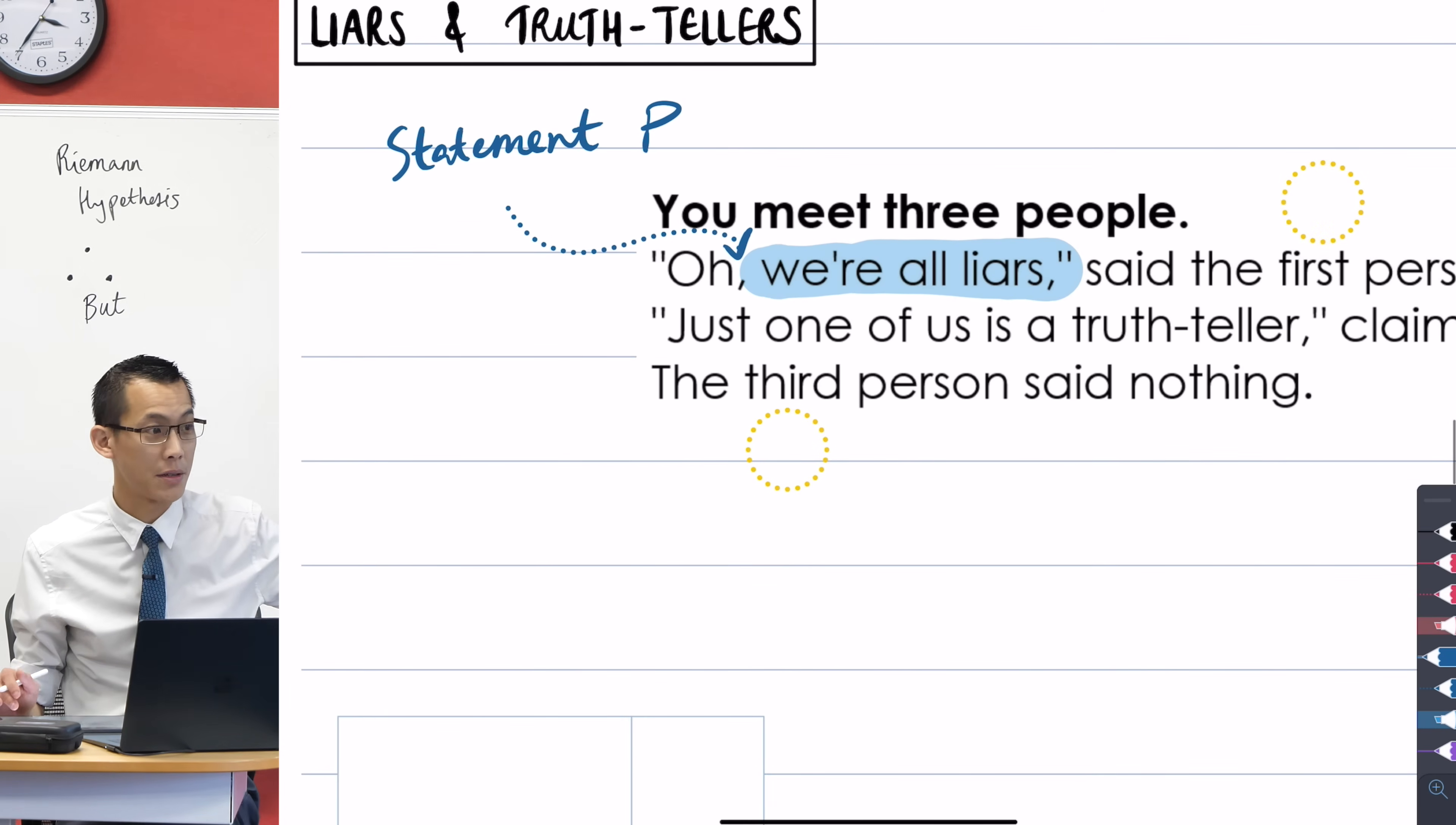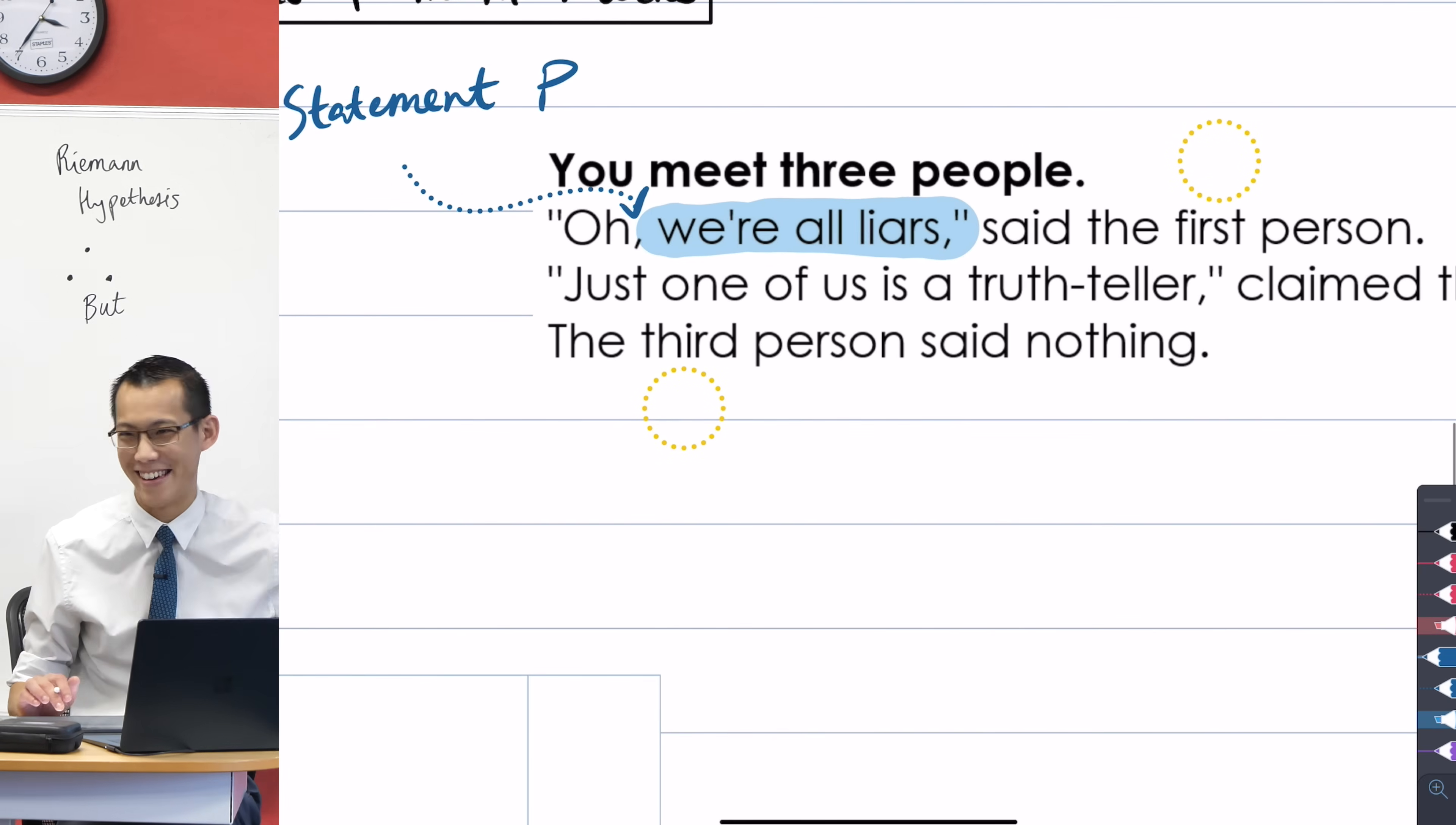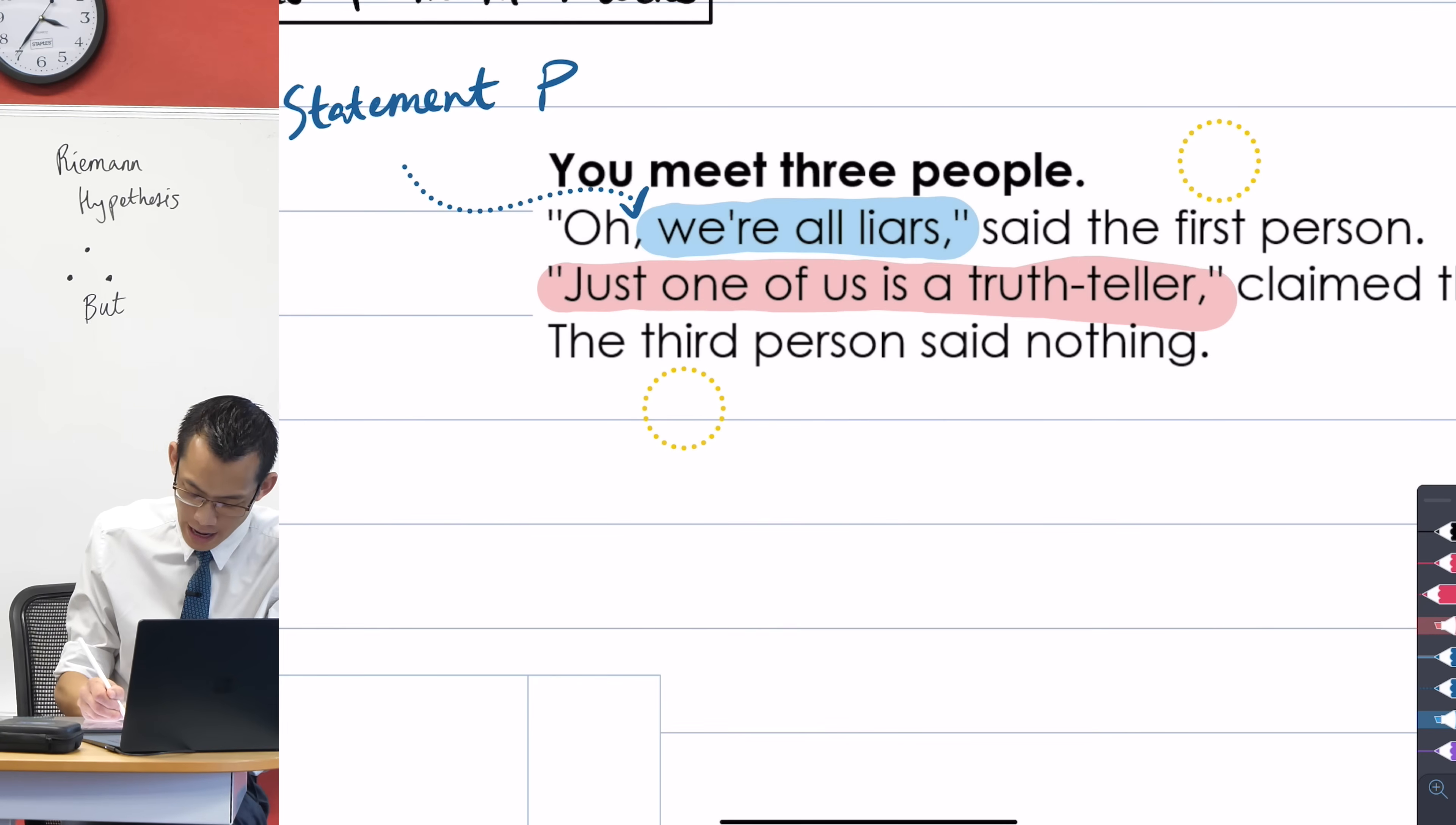Tell me the next statement that matters. Just one of us is the truth-teller. There are actually only two things that are said by anybody, so let's take that one. Just one of us is a truth-teller, and we'll give that name as well. I'm going to call this statement Q.